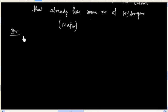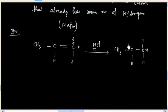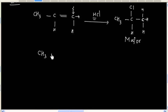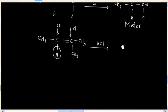Let us try some problems. We have this reaction. In this case hydrogen will go to this carbon because this carbon has two hydrogens. So the major product will be: we add hydrogen to this carbon and chlorine to this carbon — so this product is major. Now in the next reaction, this carbon has one hydrogen and this carbon has no hydrogen. So hydrogen will go to this carbon and chlorine will go to this carbon, giving us this major product.